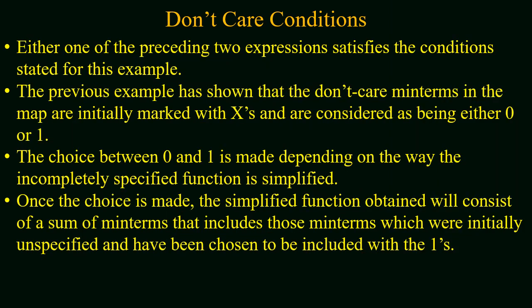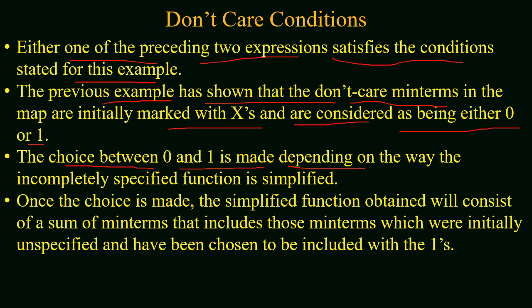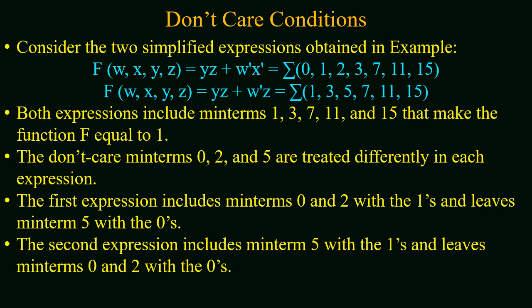Either of the two preceding expressions satisfies the condition stated for this example. The example also shows that the don't care min terms in the map are initially marked with x and are considered as being either zero or one. The choice between zero and one is made depending on how the incompletely specified function is simplified. Once you make a choice, the simplified function obtained will consist of a sum of min terms that includes those min terms which were initially unspecified and have been chosen to be included with ones.